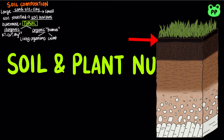Humus also builds a crumbly soil that retains water but is still porous. Loams are the most fertile topsoil that contains equal amounts of sand, silt, and clay.